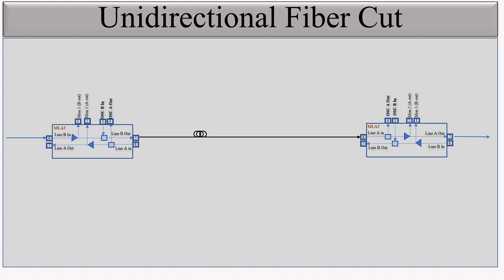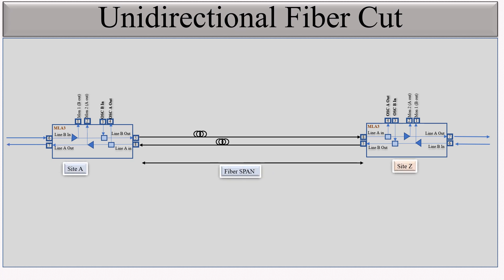You can see here: this is the fiber, this is the signal direction from site A to site Z, and this is the signal direction from site Z to site A. This is site A, this is site G, and site A and site G are connected with this fiber span. This is the fiber span — this is the length of the fiber.